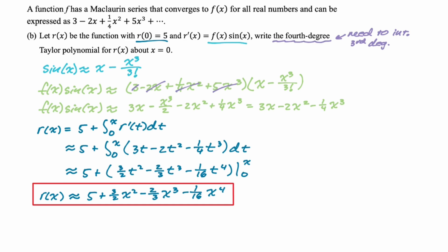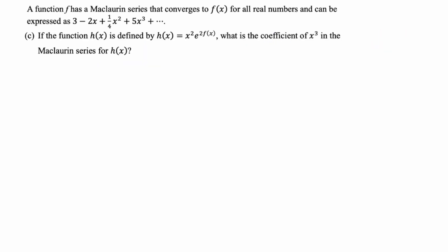That's a good problem — on an AP exam these would likely be two separate parts. Now part C is kind of brutal. I went one extra: an AP question would probably ask for the coefficient of x², but I went with x³, which means a lot of product rule work. We want the coefficient of x³ in the Maclaurin series for h(x) = x²·e^(2f(x)).